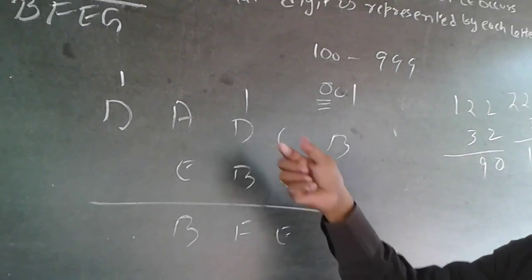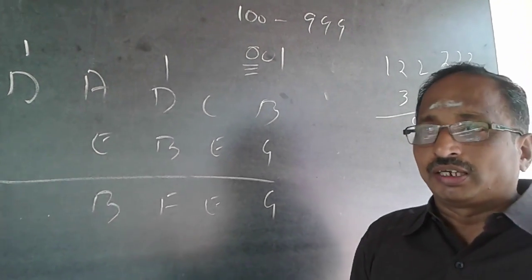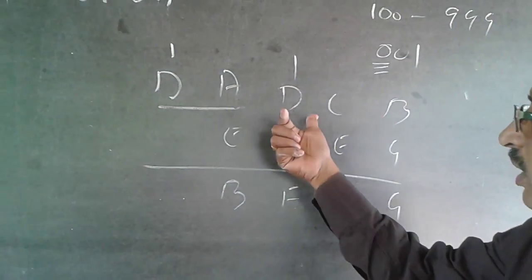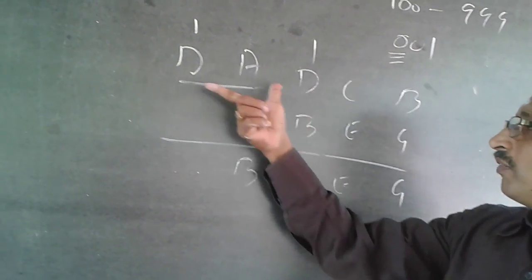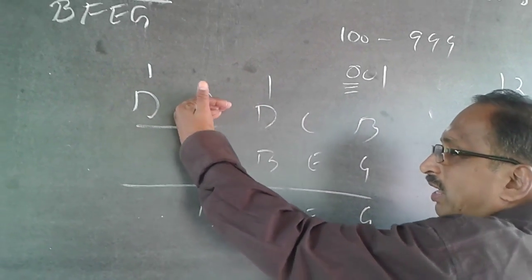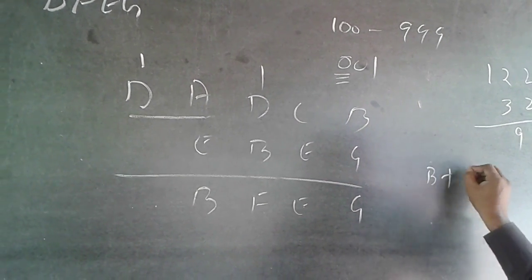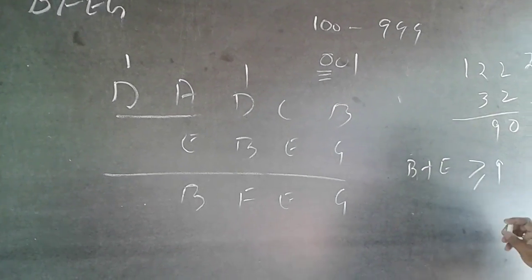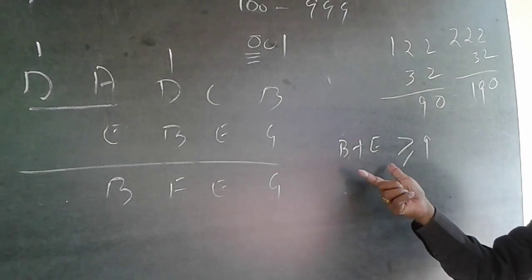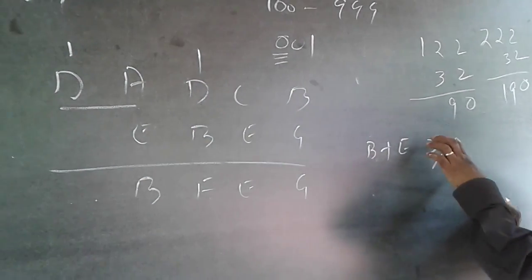Even presuming A is 0 — the lowest number possible — DA becomes 10. From this 10, I will have to lend 1, leaving 9. So 10 minus 1 is 9, and 9 minus E equals B. Reversing: B plus E equals 9. Because I presumed A to be 0, and A could be higher, B plus E is greater than or equal to 9.